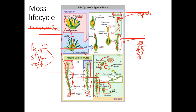You will never have a sporophyte growing up out of a male gametophyte because male gametophytes release their sperm, and the sperm finds the egg in the female gametophyte. So sporophytes only grow up out of female gametophytes.